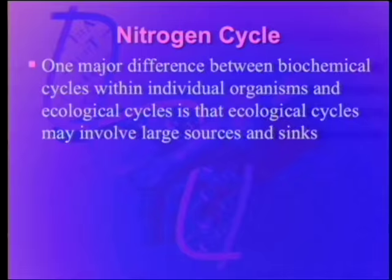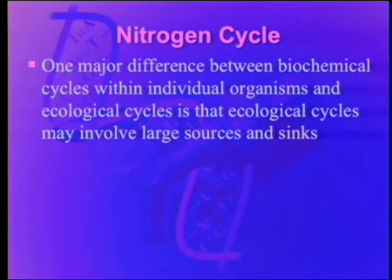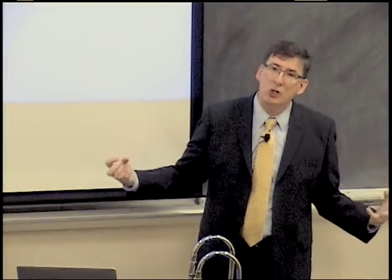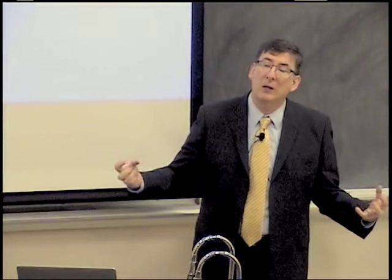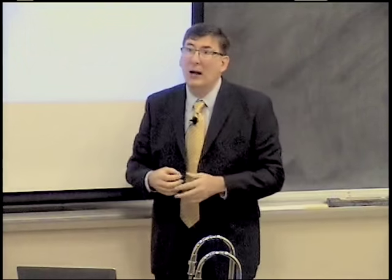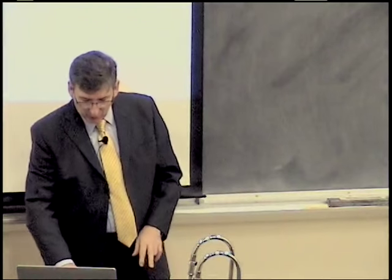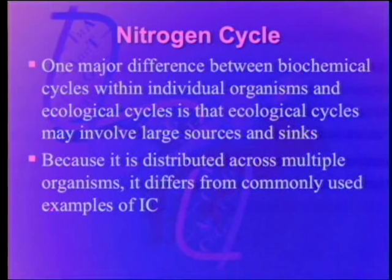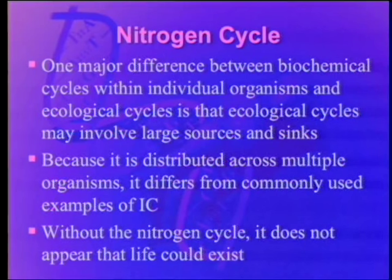The nitrogen cycle is an ecochemical pathway that in many respects exhibits the advantages that Behe outlined in terms of biochemistry. One major difference between biochemical cycles within individual organisms and ecological cycles is that ecological cycles may involve large sources and sinks — large ways of storing stuff in the environment. The atmosphere is obviously a fabulous way of storing inert N2 gas. Because it's distributed across multiple organisms, it differs from commonly used examples of irreducible complexity. And without the nitrogen cycle, it does not appear that life could exist.